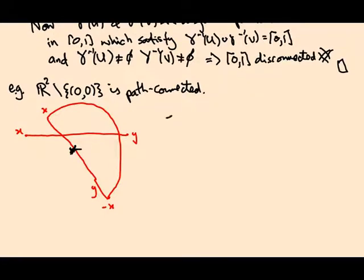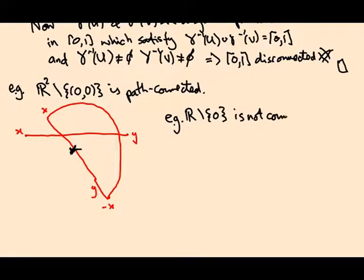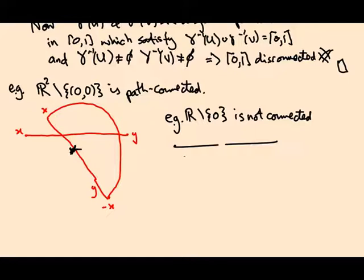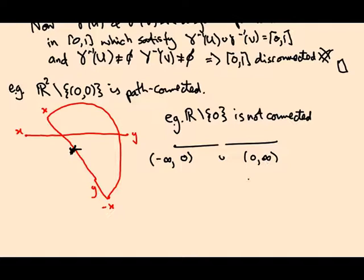By contrast, if I look at ℝ minus the origin, this is not even connected. If I take the real line and cut out the origin, I can write it as a union of two open sets: one going from −∞ to 0, and one going from 0 to +∞, not including zero in either. So it's a disjoint union of non-empty open sets — it's not connected.